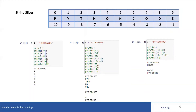In this video, I will be talking about string slices. You can return a range of characters by using the slice syntax. We can specify the start index and the end index separated by a colon to return a part of the string.